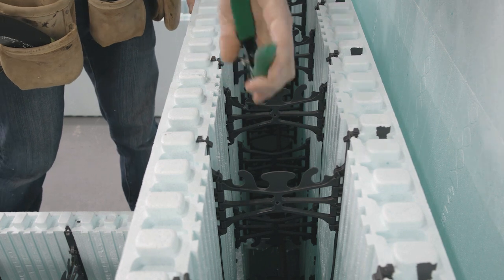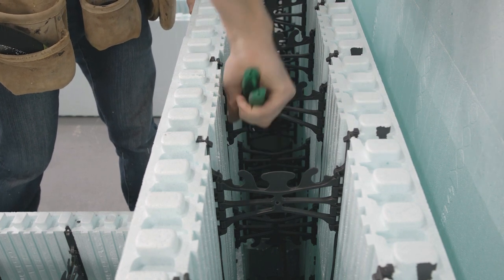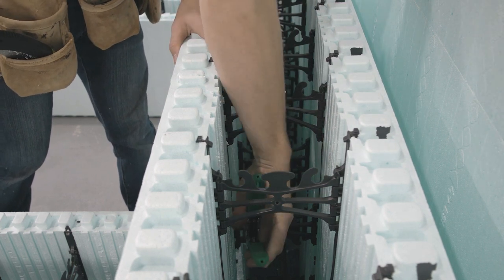Use the shears and cut the web. Remember to cut towards the inside of the EPS panel so that most of the web remains intact inside the form.